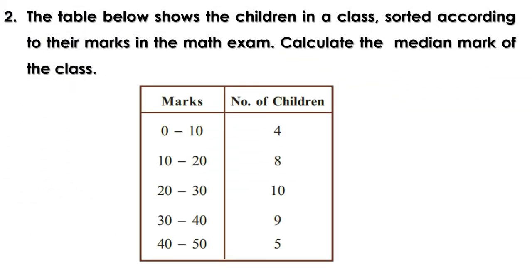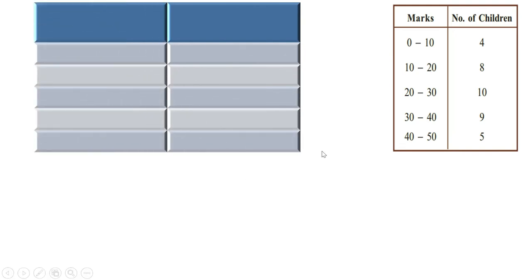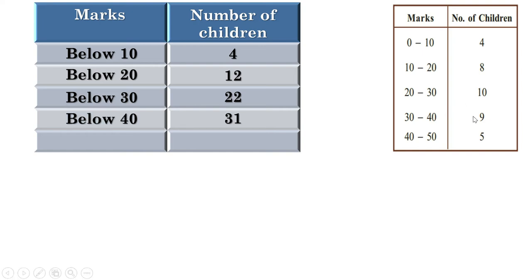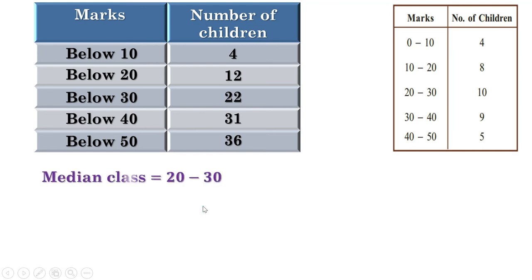Second problem: the table below shows children in a class sorted according to marks in a math exam. Calculate the median mark of the class. Cumulative frequency table — headings marks and number of children: below 10 there are 4; below 20 there are 12; below 30 there are 22; below 40 there are 31; below 50 there are 36 children. Total is an even number, so there are 2 children at the middle — the 18th and 19th. Below 20 there are 12 children and below 30 there are 22, so the 18th and 19th children have marks in between 20 and 30. Therefore the median class is 20 to 30.